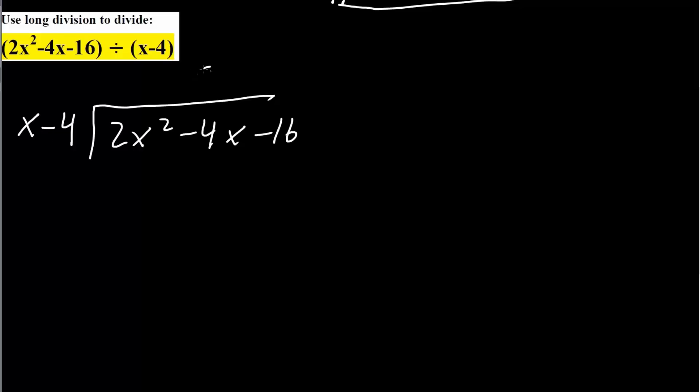So we will write 2x. And that means we did 2x times x is 2x squared. 2x times negative 4 is negative 8x. And what we do is we take the opposite. So this is positive. We take negative. So this would become negative then this would become positive. And so we're just canceling out terms. So 2x squared minus 2x squared is 0. Negative 4x plus 8x is plus 4x. And we bring down the negative 16. So minus 16.